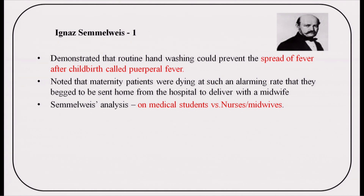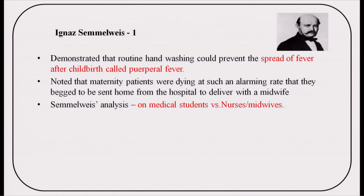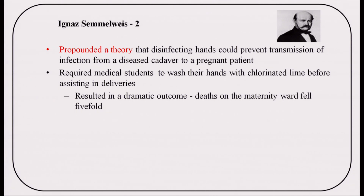As usual with pioneering ideas, his concept of hand washing as a preventive measure was ignored and ridiculed by his colleagues. When Koch's postulates were published, the germ theory of disease and Semmelweis's theory of transmission from patient to patient were considered plausible. He propounded that disinfecting hands could prevent transmission of infection from a deceased cadaver to a pregnant patient. The use of hand hygiene as a measure resulted in a dramatic outcome — deaths on the maternity ward fell fivefold.